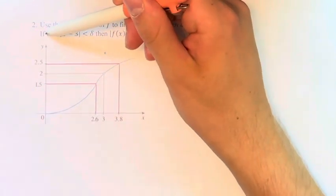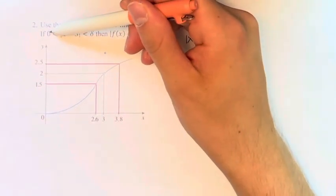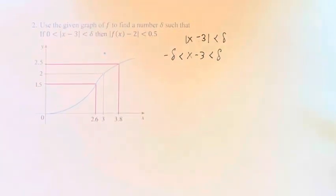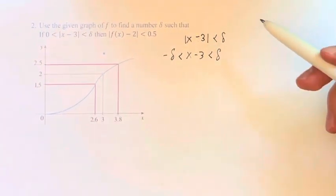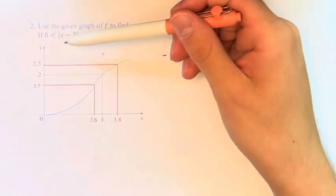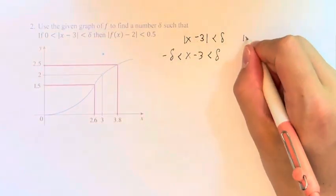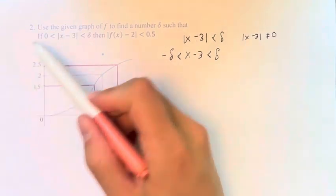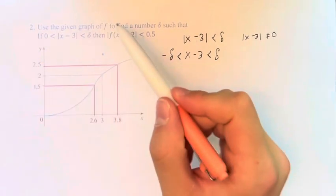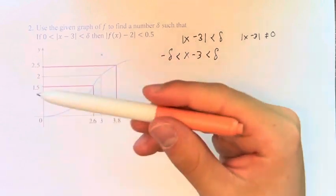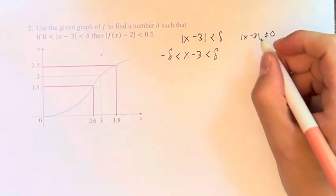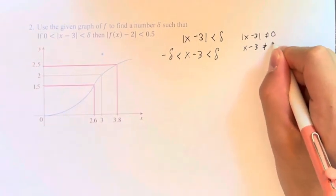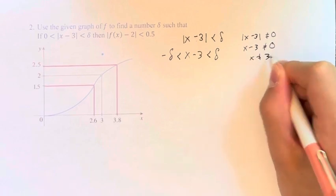And this 0 added on to this inequality only specifies that the absolute value of x minus 3 does not equal 0. Because obviously any number is less than 0, the absolute value won't be equal to because the absolute value is inherently not negative. But what we're saying here is that x minus 3 is not equal to 0, x is not equal to 3.